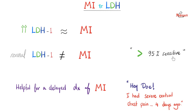Another useful feature of LDH: it returns to normal after about 5 to 10 days. This can help diagnose a delayed case of myocardial infarction. For example, a patient describes severe central chest pain radiating to the left arm, jaw, and shoulder — like an elephant sitting on the chest — with sweating and a sense of impending doom that happened four days ago. LDH can help confirm this.